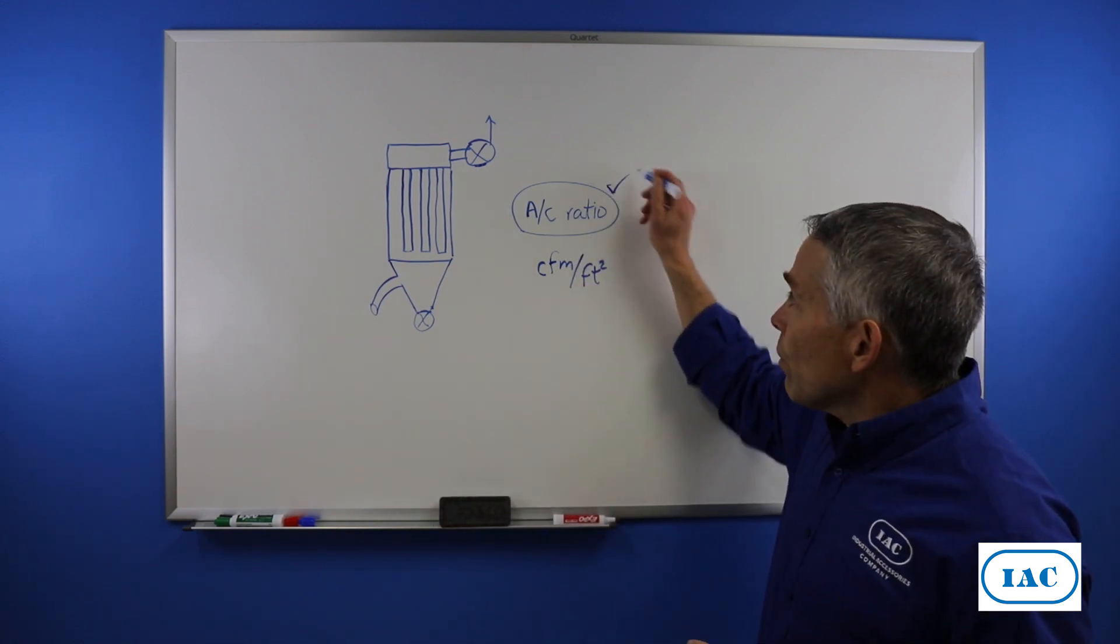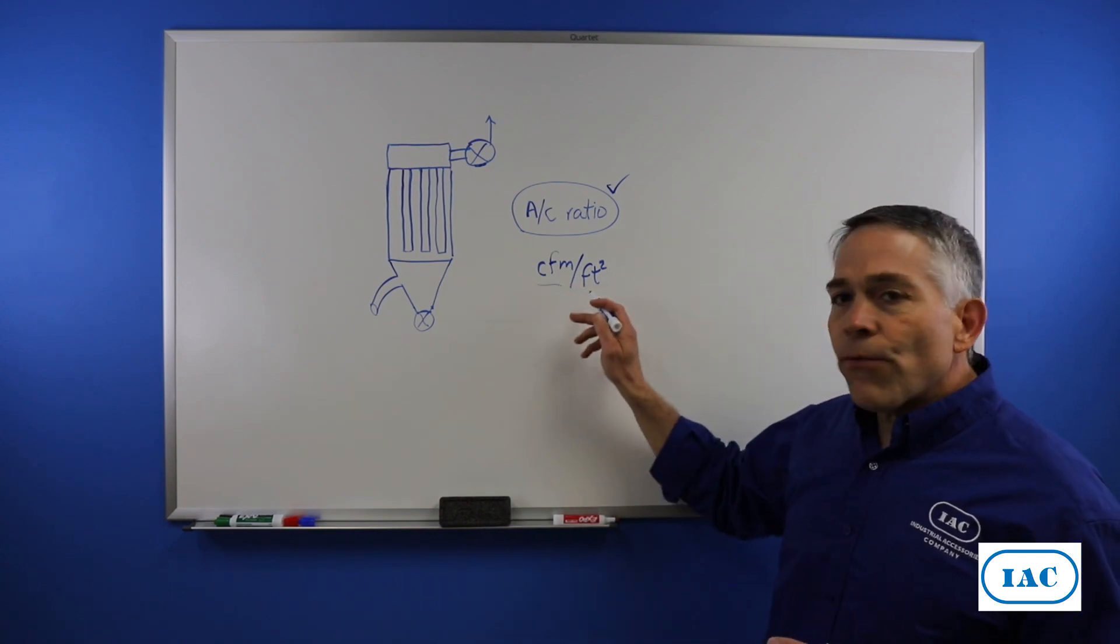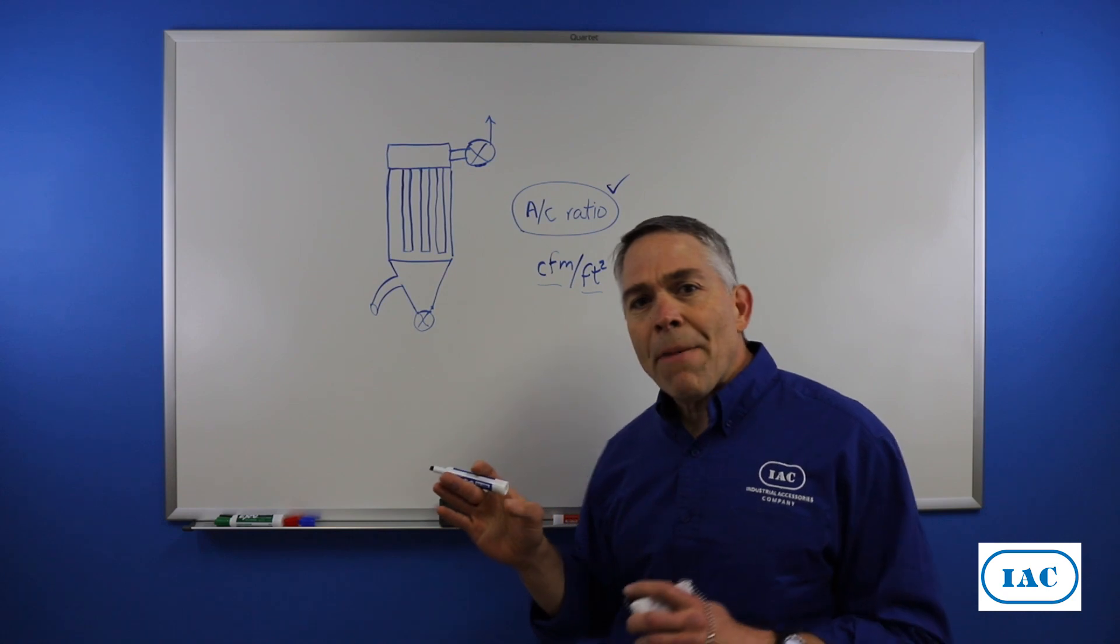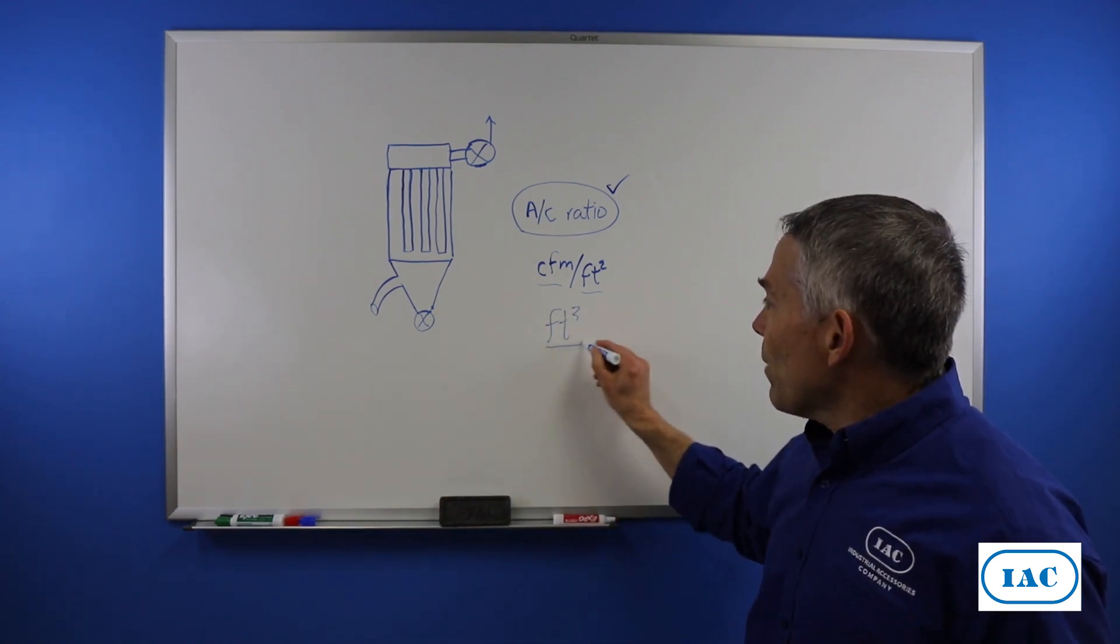Usually we just focus on air-to-cloth ratio. So what is air-to-cloth ratio? If we look at it, it's CFM per square feet. I don't want to get too much into the math, but this, if we look at what it represents,